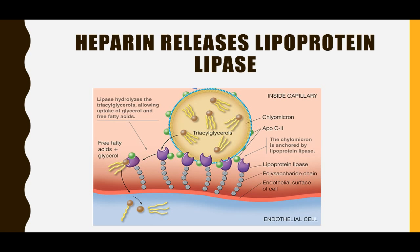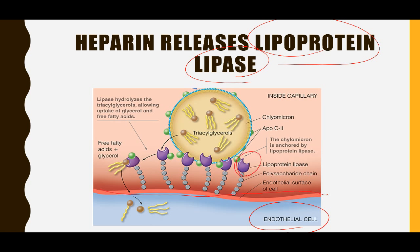Heparin releases lipoprotein lipase. Lipoprotein lipase is an enzyme located in the capillary endothelium — it is attached to the endothelium. This is your endothelial cell, this is the surface, and the lipoprotein lipase is in the capillary lumen, attached to the endothelial surface by heparan sulfate. Heparin and heparan sulfate are different — you should know this.